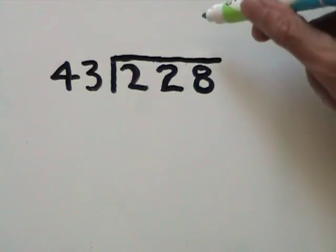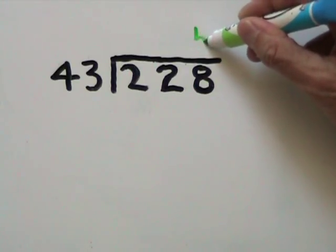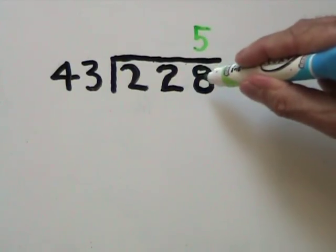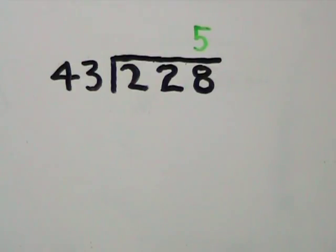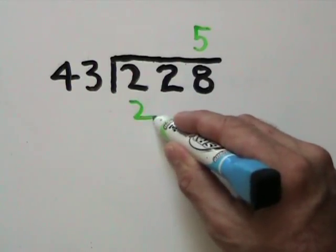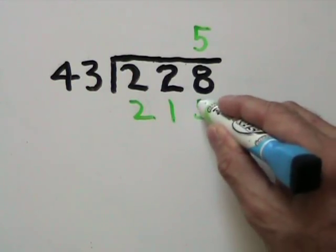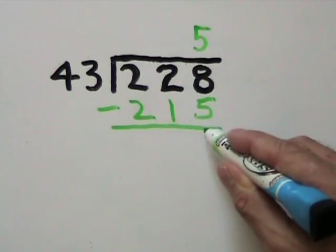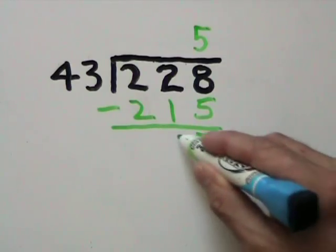In this case, 5 will work because 5 times 43 is 215. We put our 5 directly over our 8 because we're working with the whole dividend. Take our 5, multiply it by 43 to get 215. We subtract 215 from 228 to get 13.